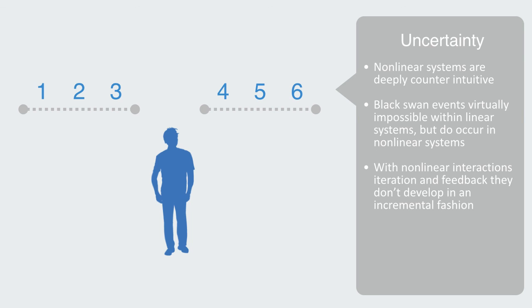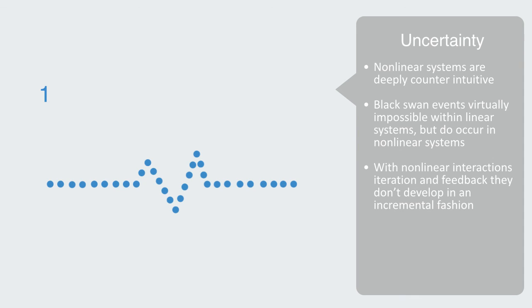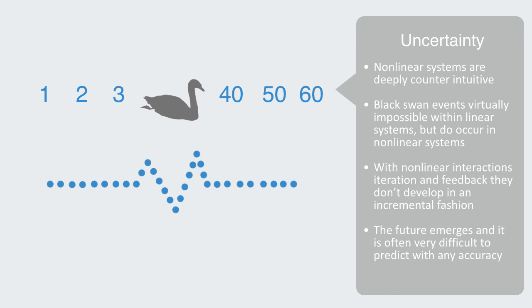But these periods of transient, incremental progress and stability, are punctuated by rapid, seismic shifts, what are called phase transitions. On the other side of which, the system is very different. Because of these phase transitions, the future emerges, and it is often, very difficult to predict, with any accuracy. And chaos theory, has taught us, that there is a deep uncertainty, to the development of these non-linear systems.